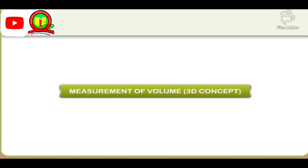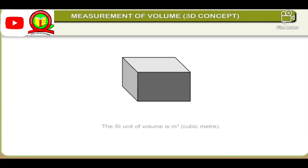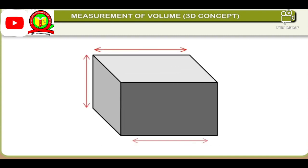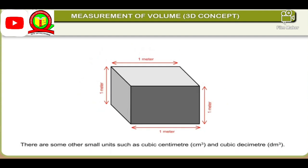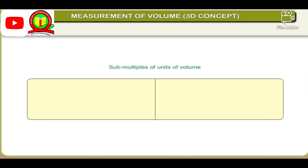Volume of an object is the space occupied by it. The SI unit of volume is cubic meter. 1 cubic meter is the volume occupied by a cube whose each side is equal to 1 meter. There are some other small units such as cubic centimeter and cubic decimeter. 1 cubic centimeter is the volume occupied by a cube whose side is equal to 1 centimeter.